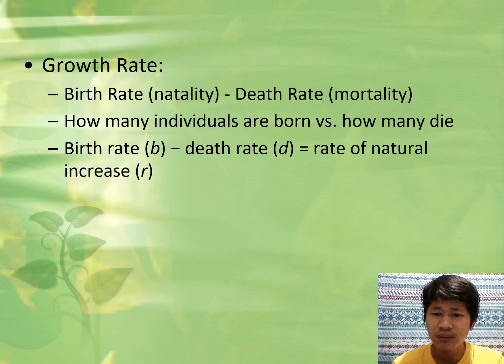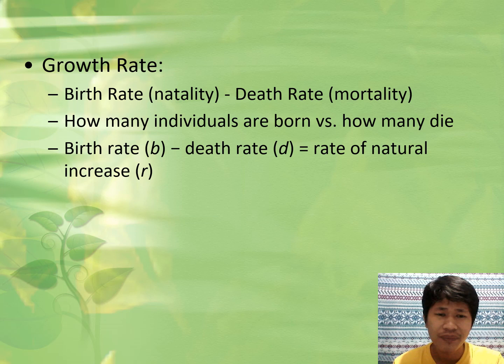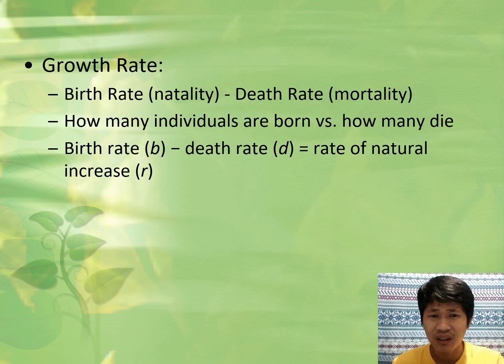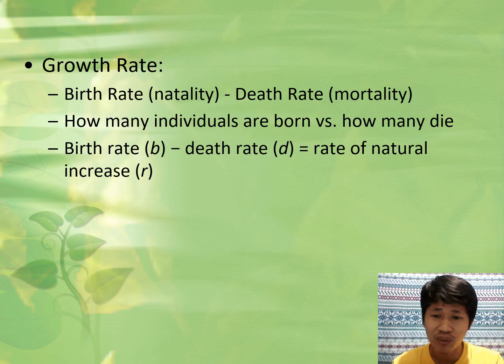A growth rate is the relationship between birth rate and death rate — natality versus mortality. How many individuals are born versus how many die. Is the growth rate fast? Meaning, are there more births than deaths? Or is it slow, meaning birth rate is controlled? In human population, we can control it through family planning. But in the wild, in other organisms, the growth rate is really fast. It depends on natural resources, food supply, or carrying capacity, which I will explain later.